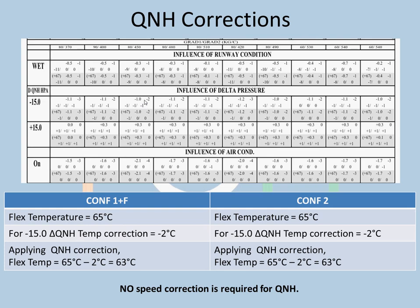Now we apply corrections. The chart was designed for all thrust reverses operative; the wet correction of −1 and −1 and speed corrections of −8, −8, 0 could be applied directly. However, since we're treating it as all thrust reverses inoperative, we'll use the FCOM method instead. For QNH: 998 hPa lies in the −15 box, giving a correction of −2. So 65 − 2 = 63 on both configurations. No speed correction is applied for QNH.